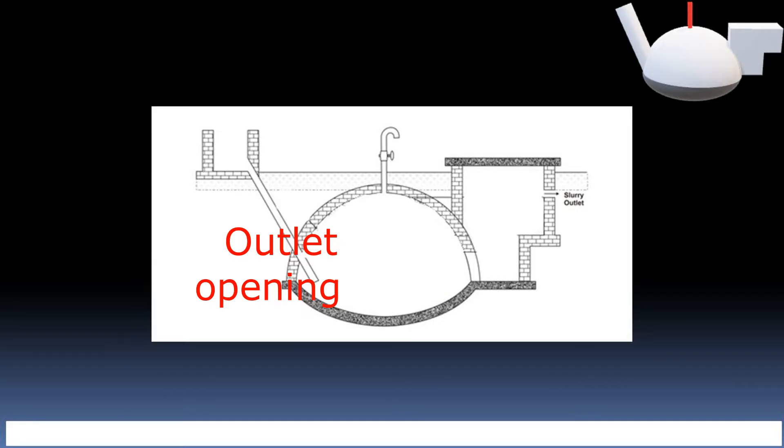Outlet opening is visible in 2D diagram but not in 3D. Mixing tank is not shown in 3D model. With these basics, we can now start to see the working of biogas plant.